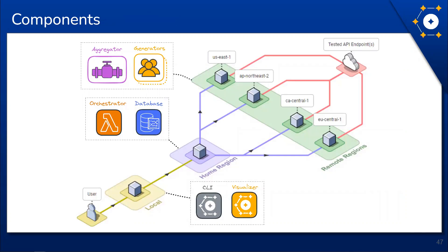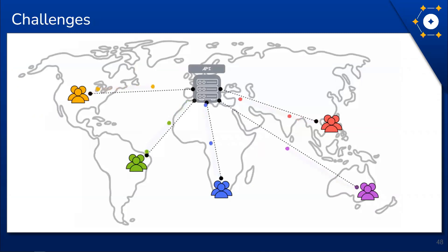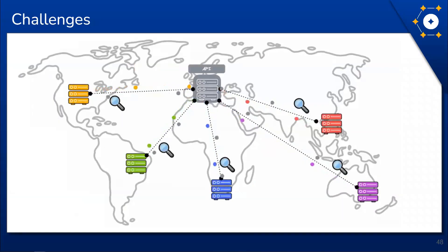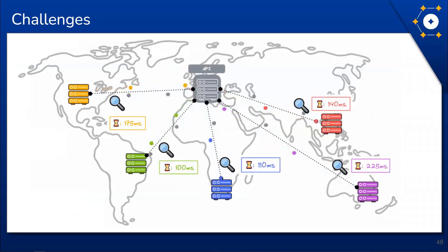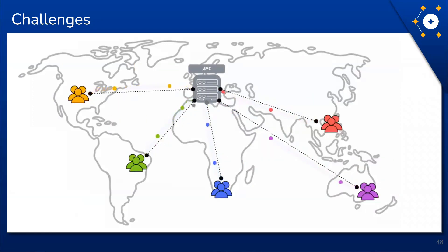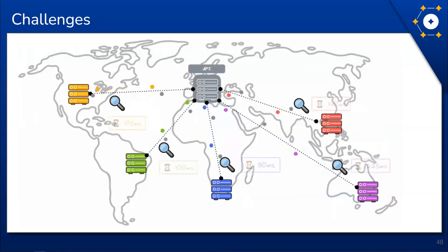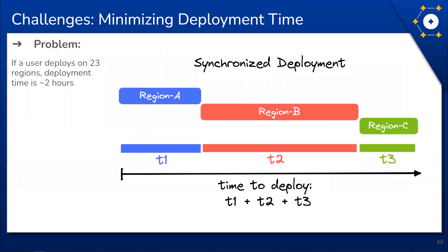So far we have gone over the components that make up Constellation as well as Constellation's architecture, starting from the local system, moving into the cloud, and finishing with the data being visualized back in the local system. Next we're going to dive into some challenges we faced when developing Constellation. The Constellation framework allows the user to test an API with virtual users coming from one or more regions. The amount of virtual users in a test dictates the number of components involved, and the regions chosen by the user dictate how these components are distributed.